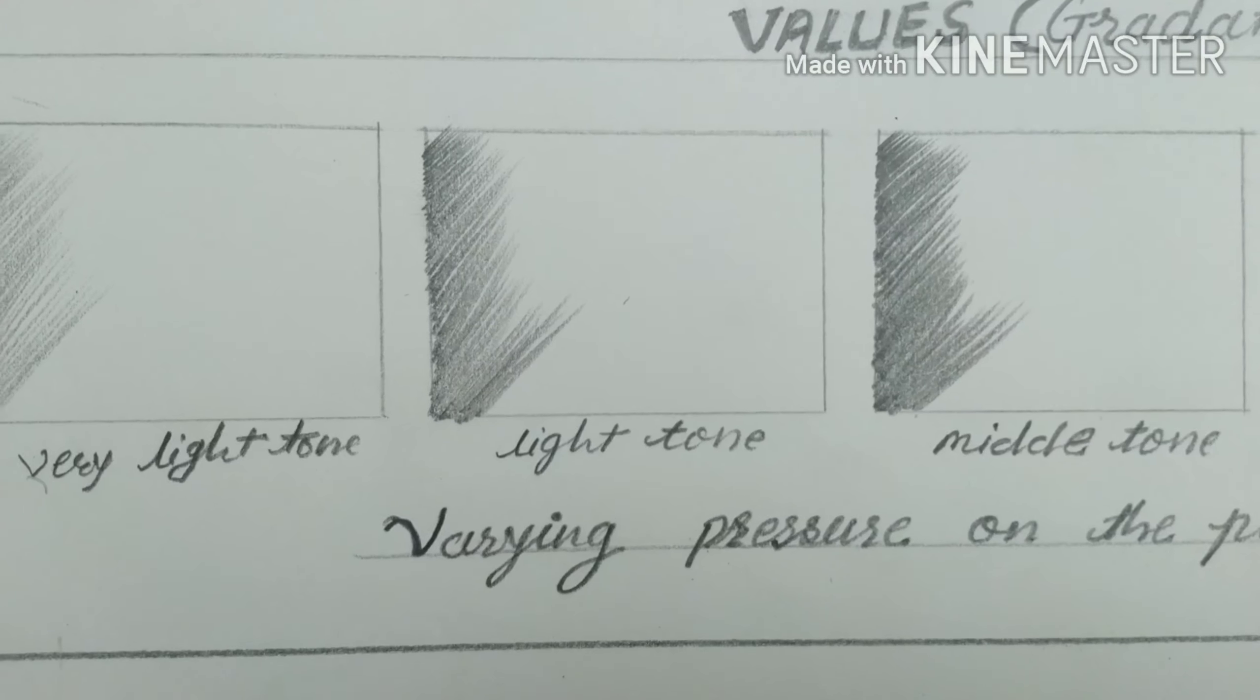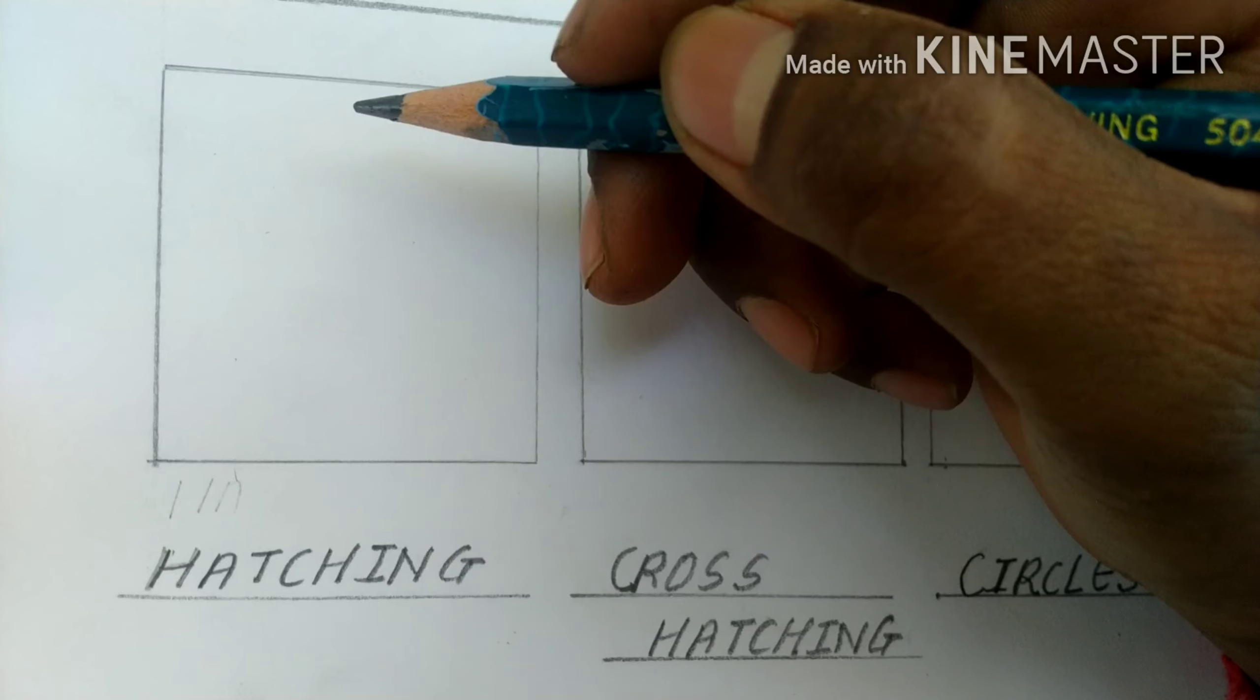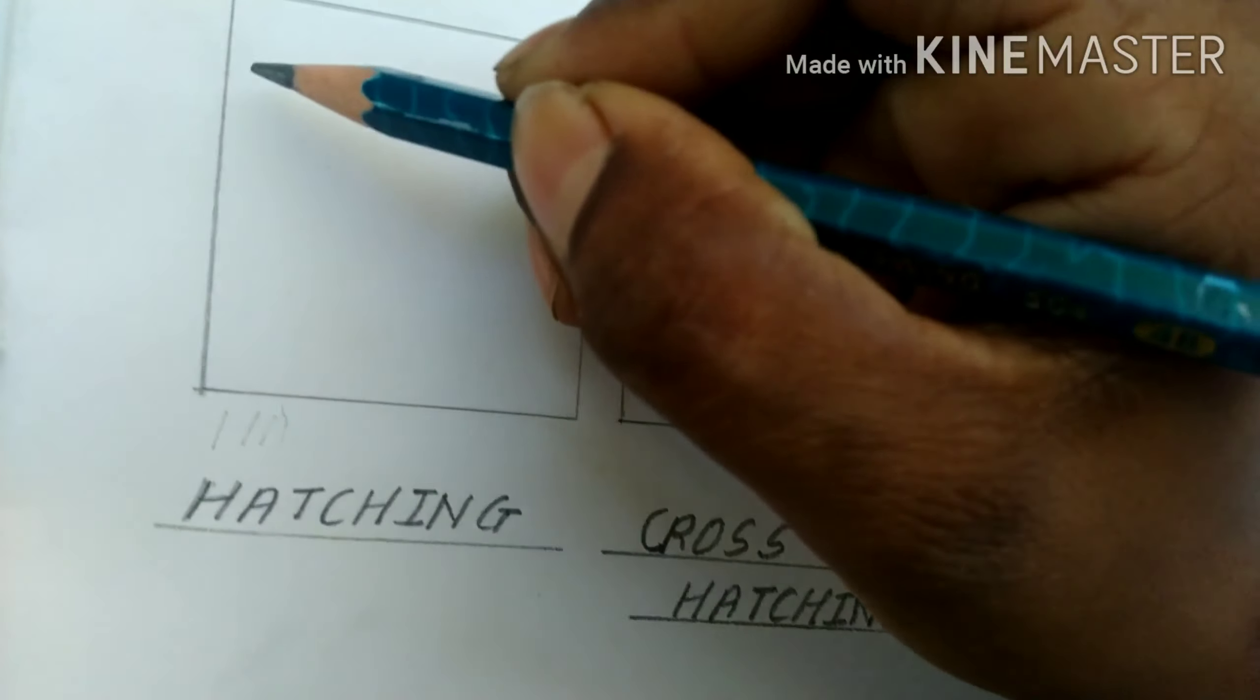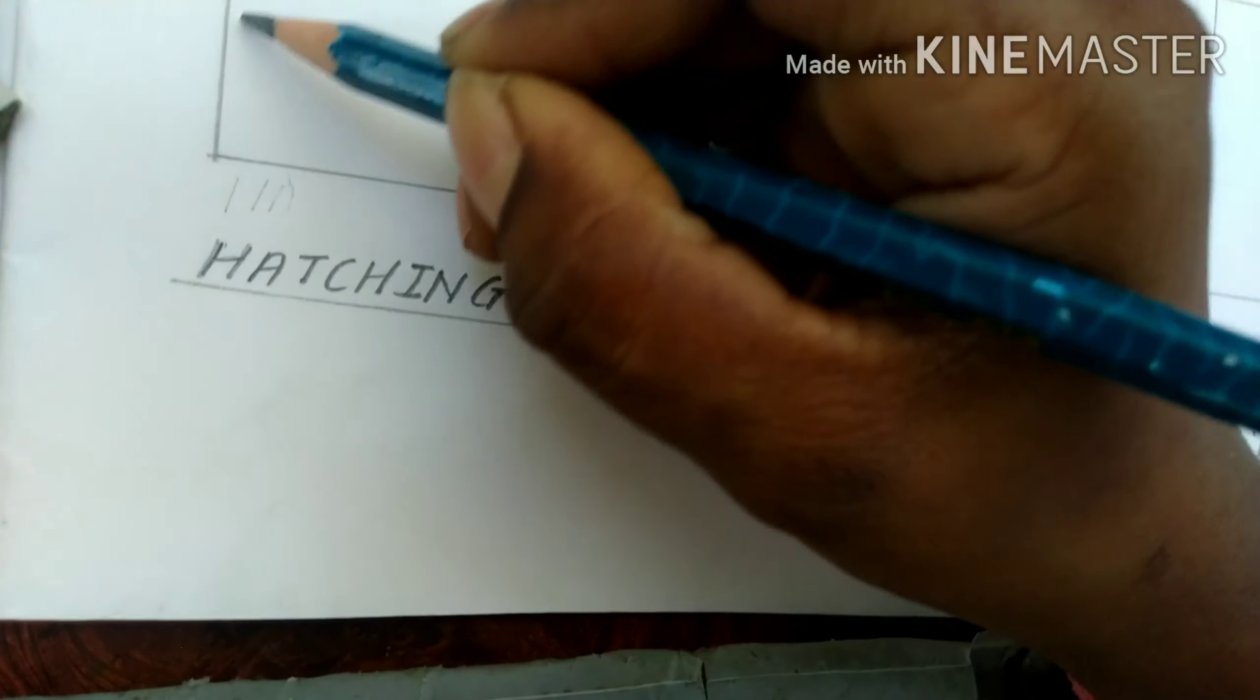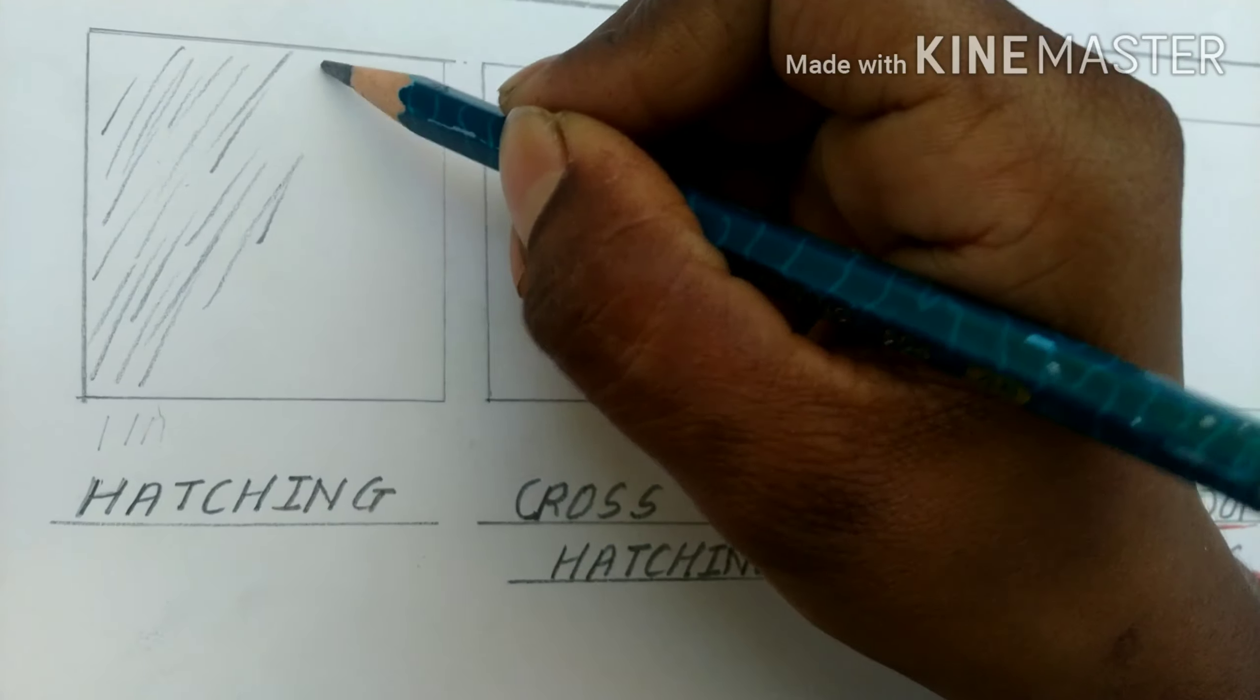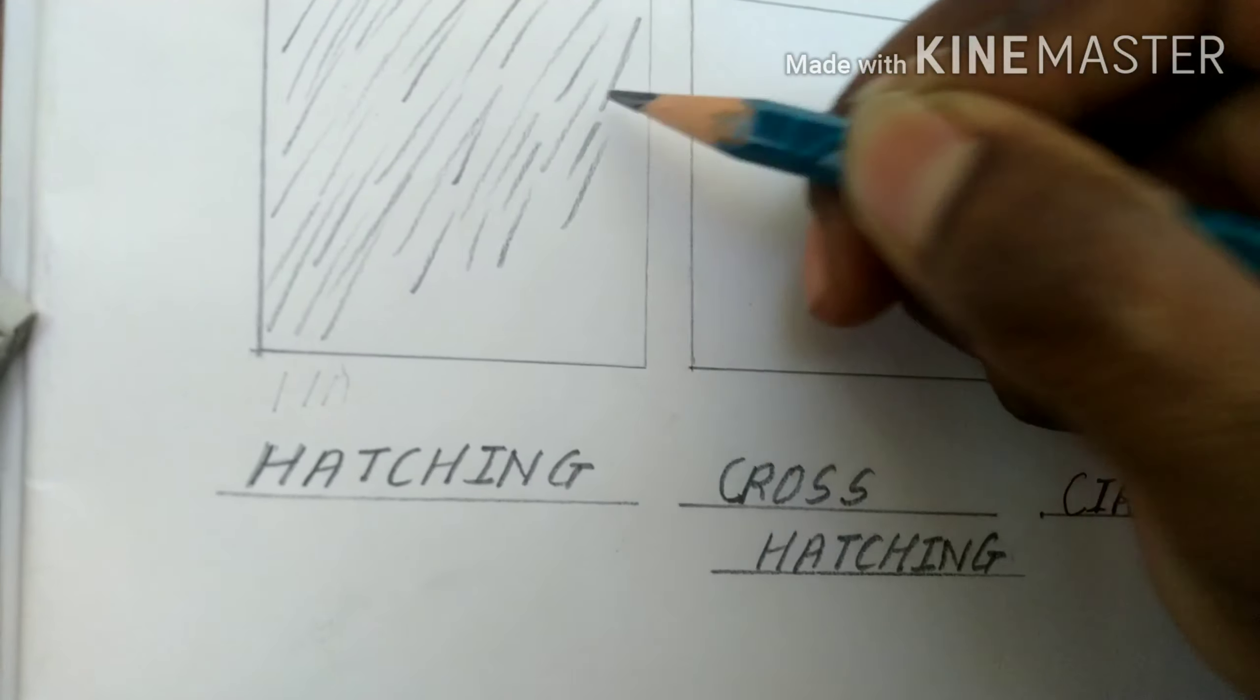This is the easiest method of shading. Next, now we have to see hatching line. You can draw strokes in any direction you are comfortable with.